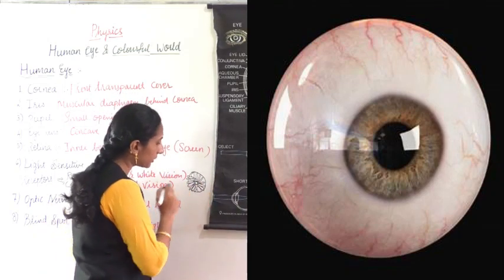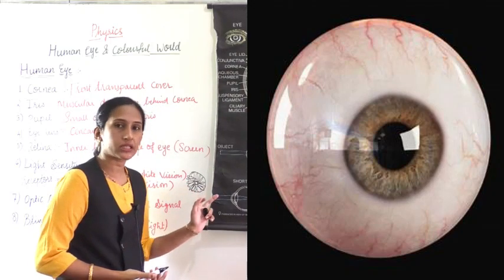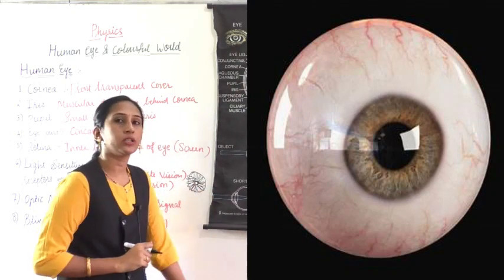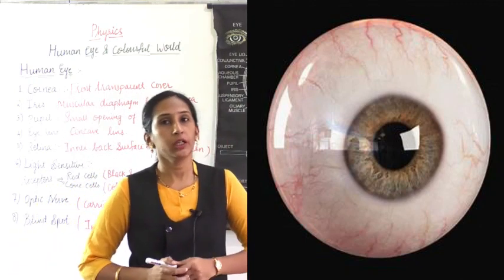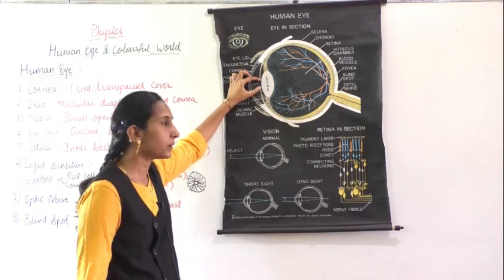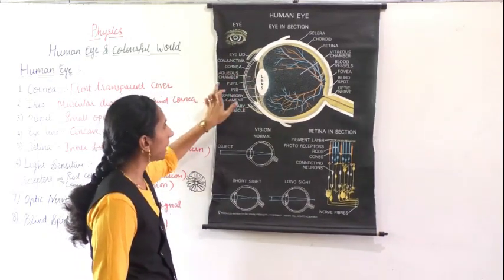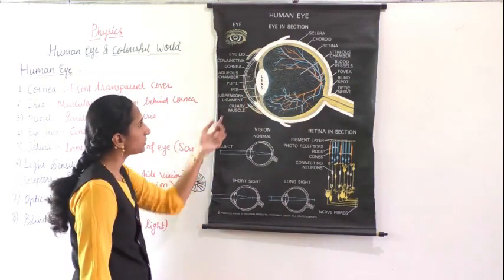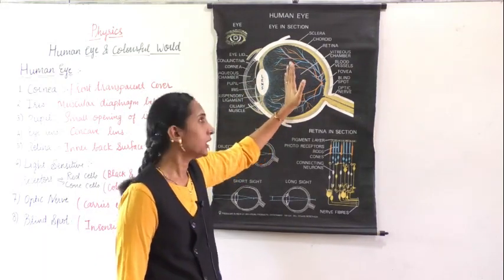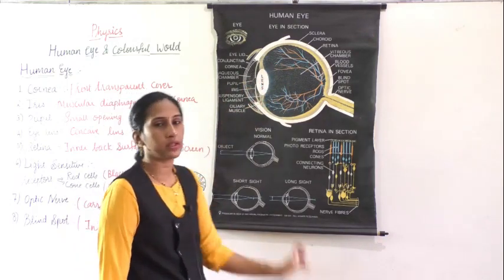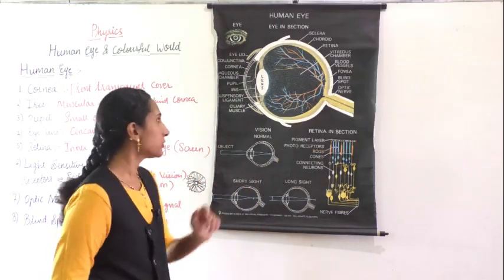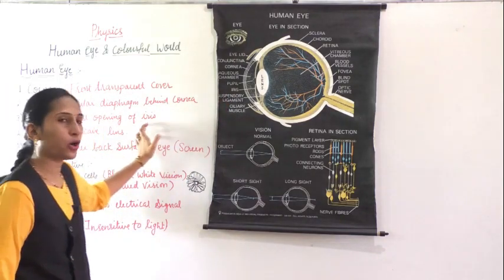The iris is the muscular diaphragm that indicates the color of the eye — whether it is brown, black, or blue. The small opening in the center of the iris is called the pupil. The pupil's function is to allow light to enter the eye. Light enters through this small opening and behind the pupil there is the lens.